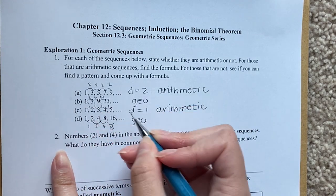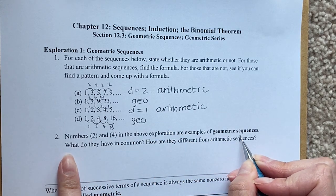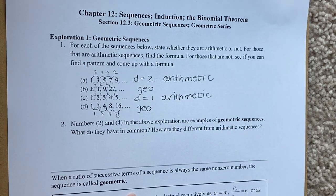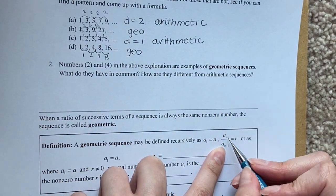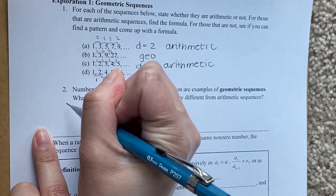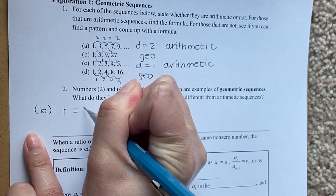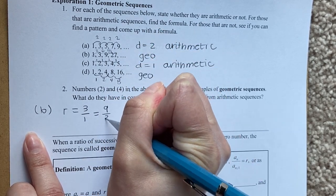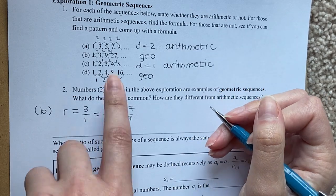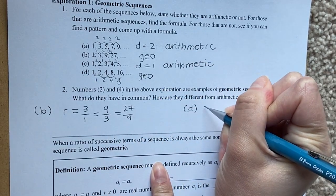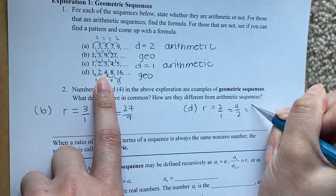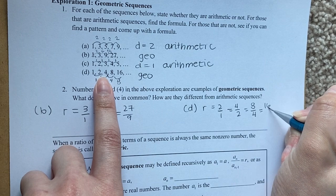Sequences 2 and 4 are geometric sequences. What do they have in common? They share what we call the common ratio. The common ratio is the second term divided by the first term. For sequence B, R equals 3 divided by 1, which is the same as 9 divided by 3, and 27 divided by 9. For sequence D, R equals 2 over 1, which equals 4 over 2, which equals 8 over 4, which equals 16 over 8.